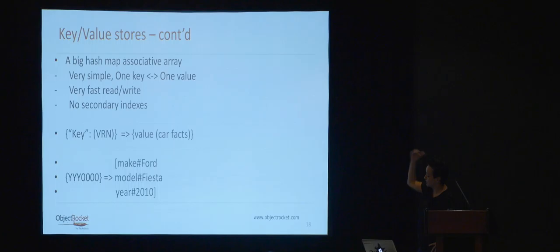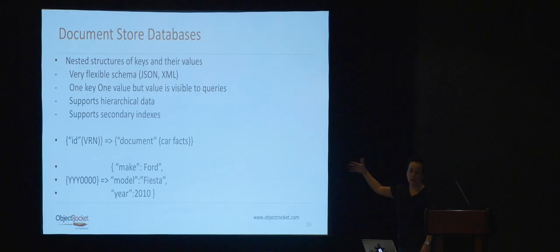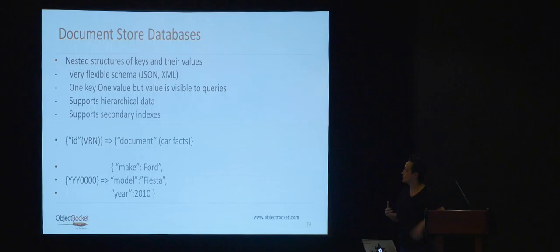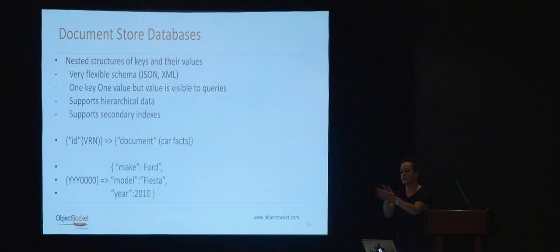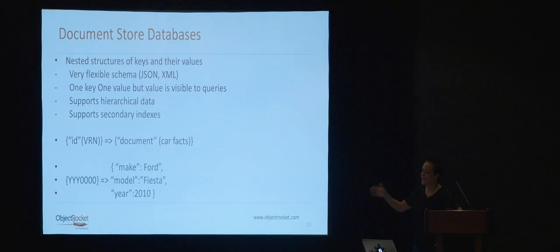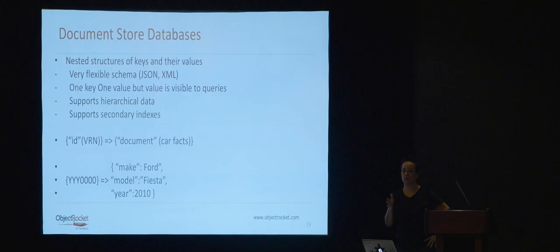Document stores like MongoDB offer the flexibility of a JSON-based schema. They support secondary indexes — added in version 2.6 with index intersection. However, earlier versions of 2.6 had significant optimizer engine problems that made some queries significantly slower than version 2.4. It wasn't until about 2.6.5 and above that those issues were resolved. Version 3.0 had several bugs that caused data loss, which is obviously a serious problem.